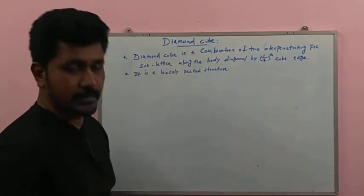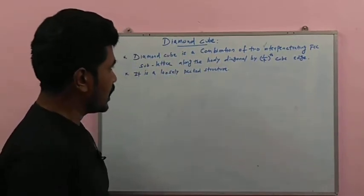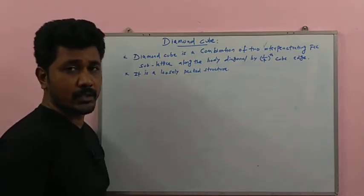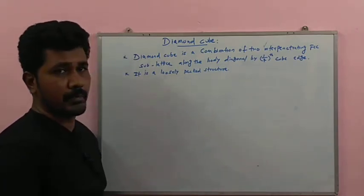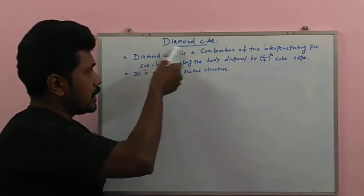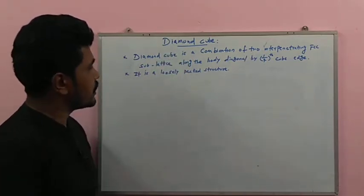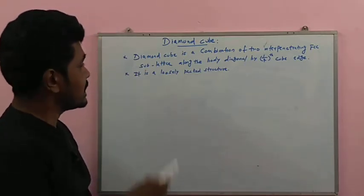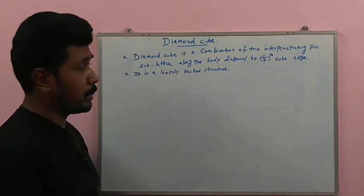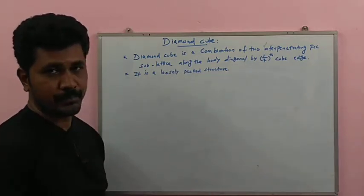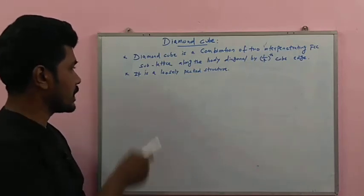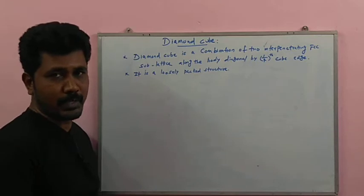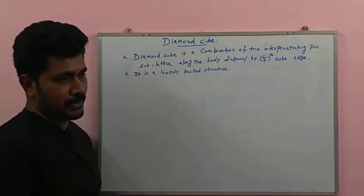Diamond cubic structures are different from simple cubic, body-centered cubic, face-centered cubic, triclinic, monoclinic, etc. The diamond cubic is a combination of two interpenetrating FCC sublattices along the body diagonal by one-fourth of the cubic edge. It is a loosely packed structure.